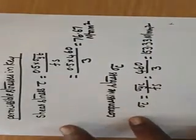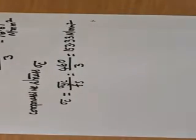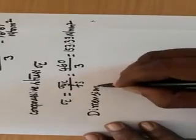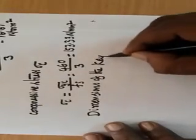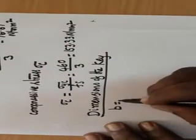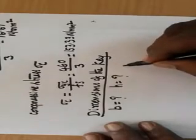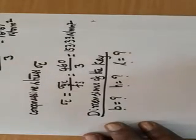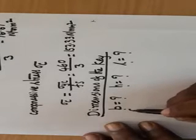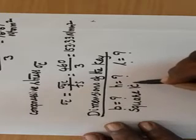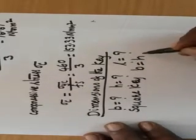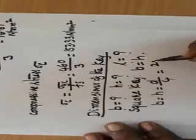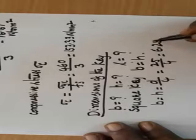After finding the allowable stresses, dimensions of the key. Here, dimensions means we should find out B value, H value and L value. Because it is given it is a square key, so B equal to H. By empirical relation B equal to H equal to D by 4, that is 25 by 4, it is 6.25 mm.